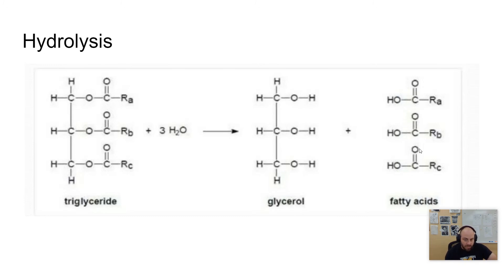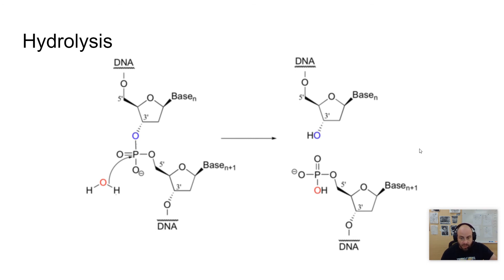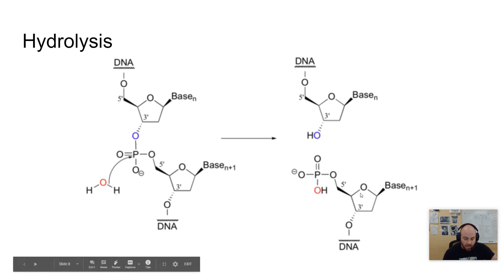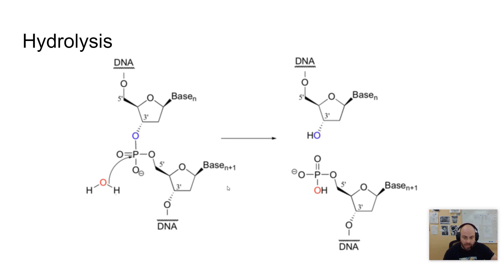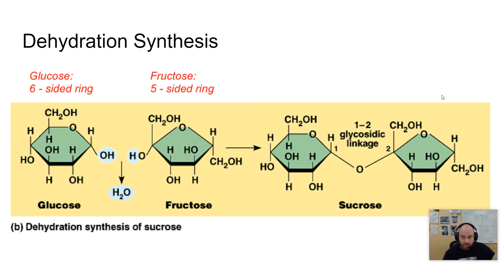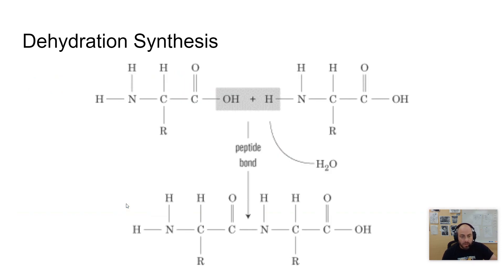Large amounts of energy can be released in hydrolysis reactions, and we'll talk about the hydrolysis of several different kinds of molecules in this class. Here is an example of a nucleic acid being broken down. Here's DNA with two nucleotides combined. Water (H2O) is added, and those two molecules are separated, with the O going on one side and the OH going on the other. Our bodies also perform hydrolysis on sucrose all the time — you add water to break it apart, just as you removed water to put it together. These two reactions are the opposite of one another.